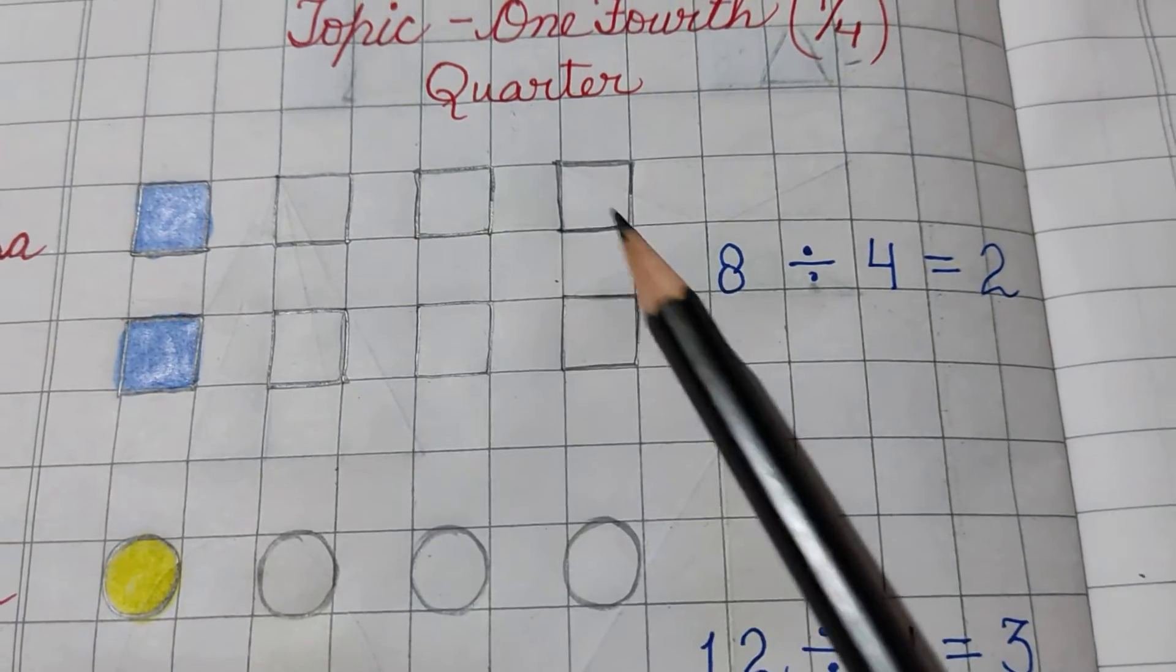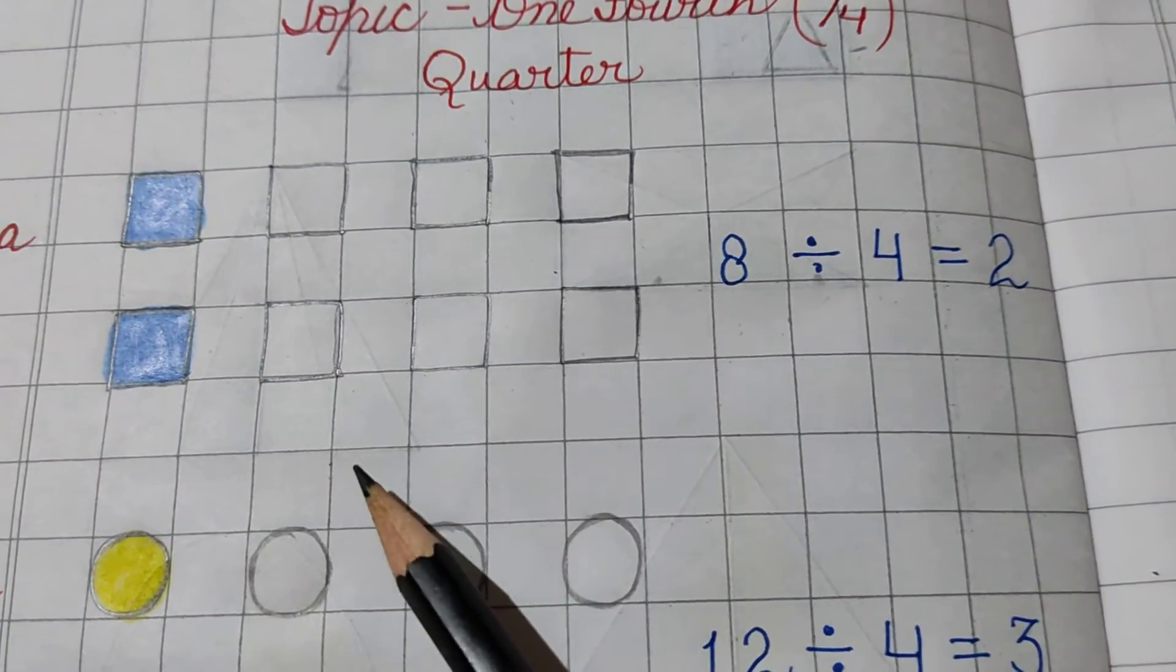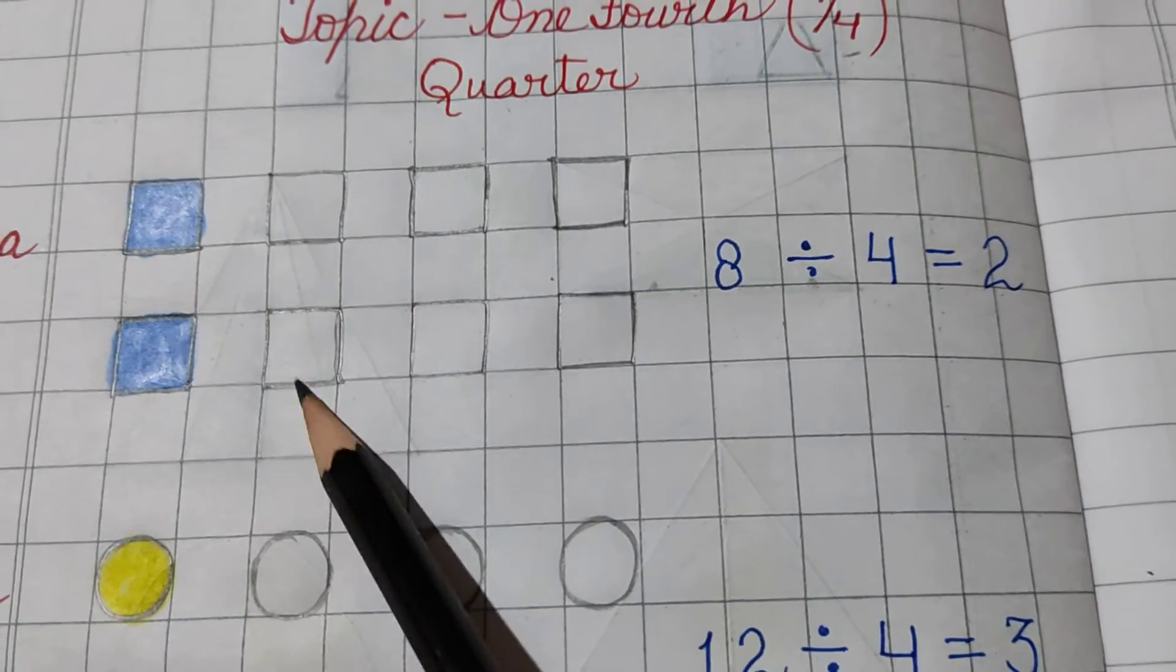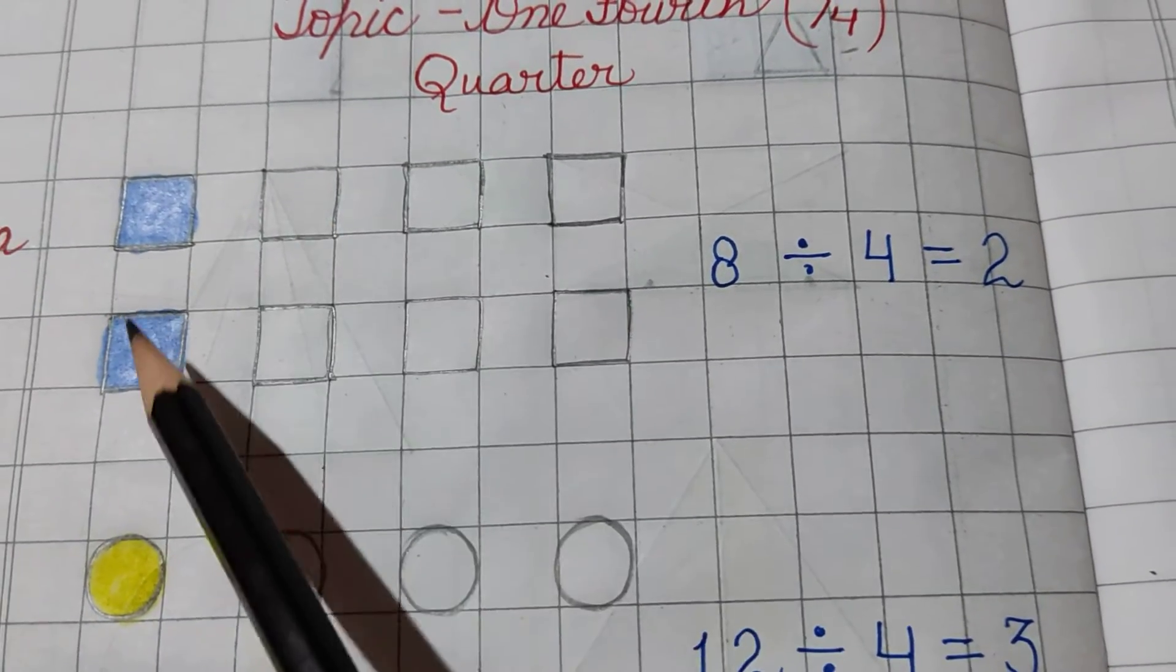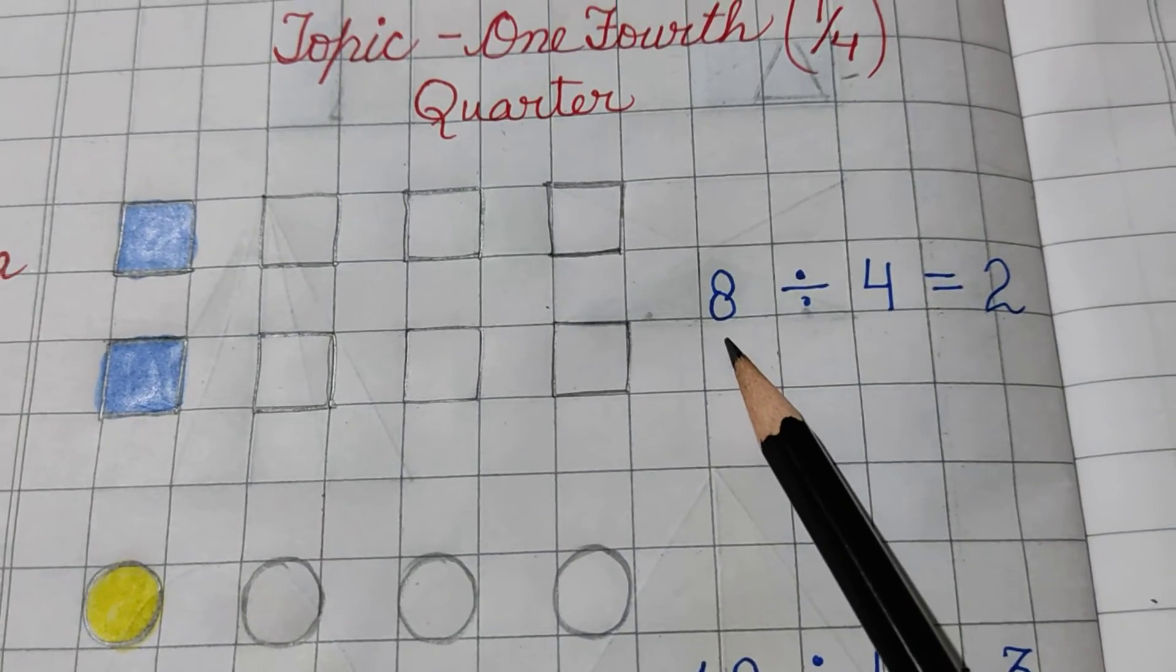A part, I have drawn some squares here. Let's count 1, 2, 3, 4, 5, 6, 7, 8. These are 8 squares, so I have written 8 here.